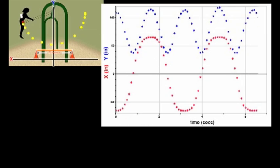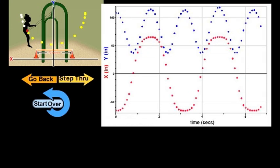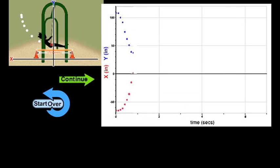As we step through the animation, we can point out important features of the graphs as the swinger is in motion. For example, we can see that when the swinger is at the bottom of her swing, the graph of the vertical position is at a minimum, and the graph of the horizontal position is close to zero.